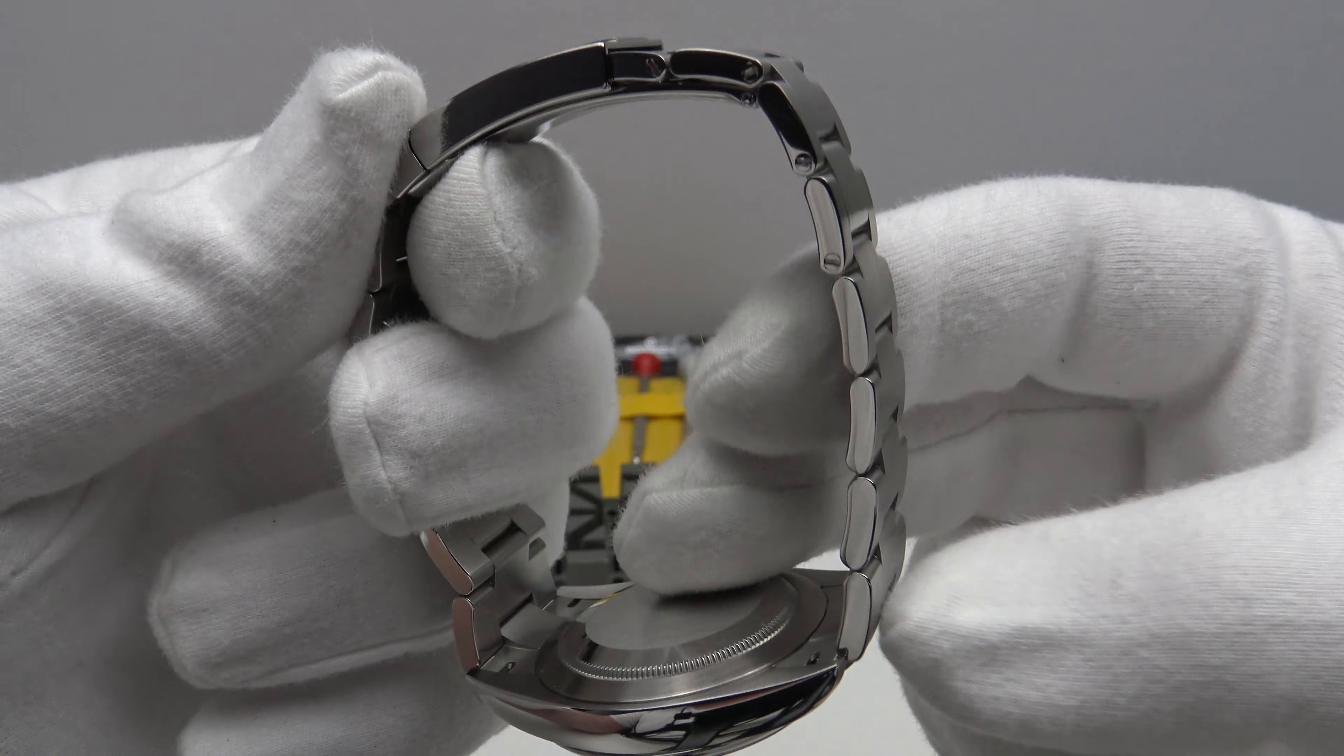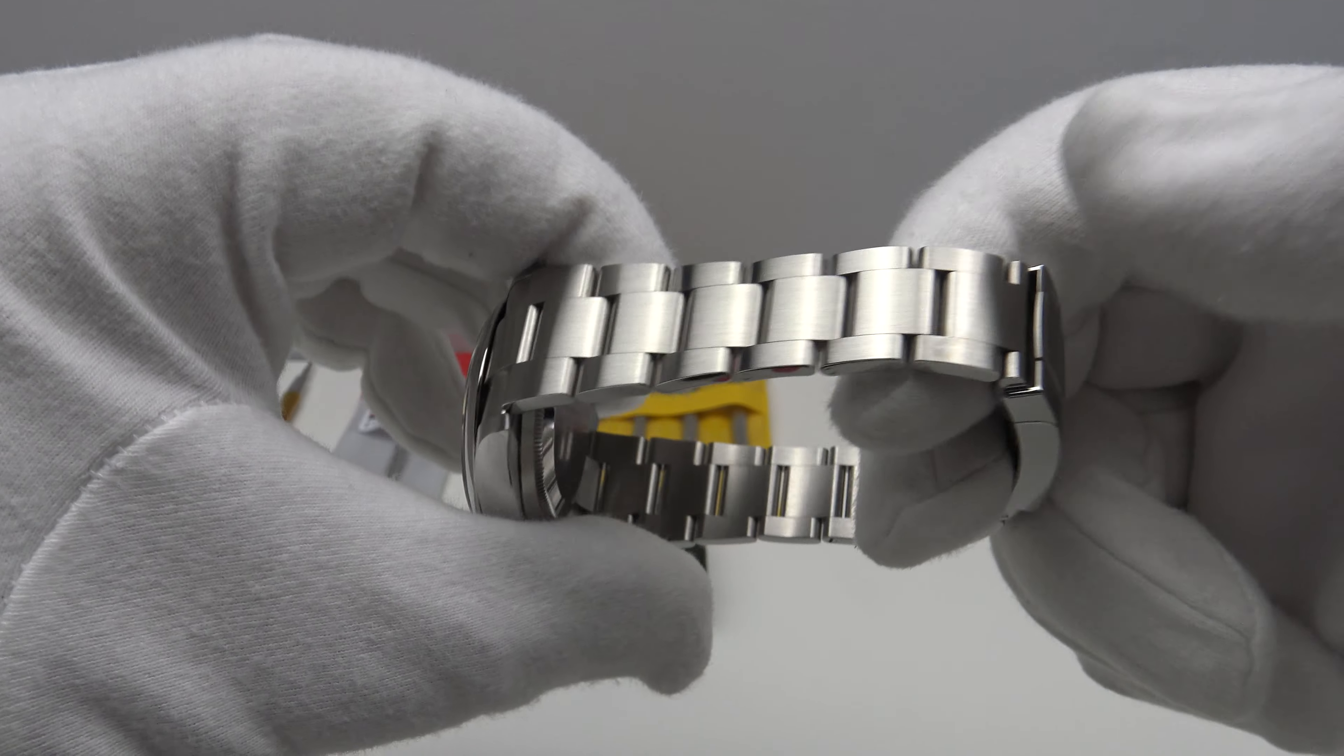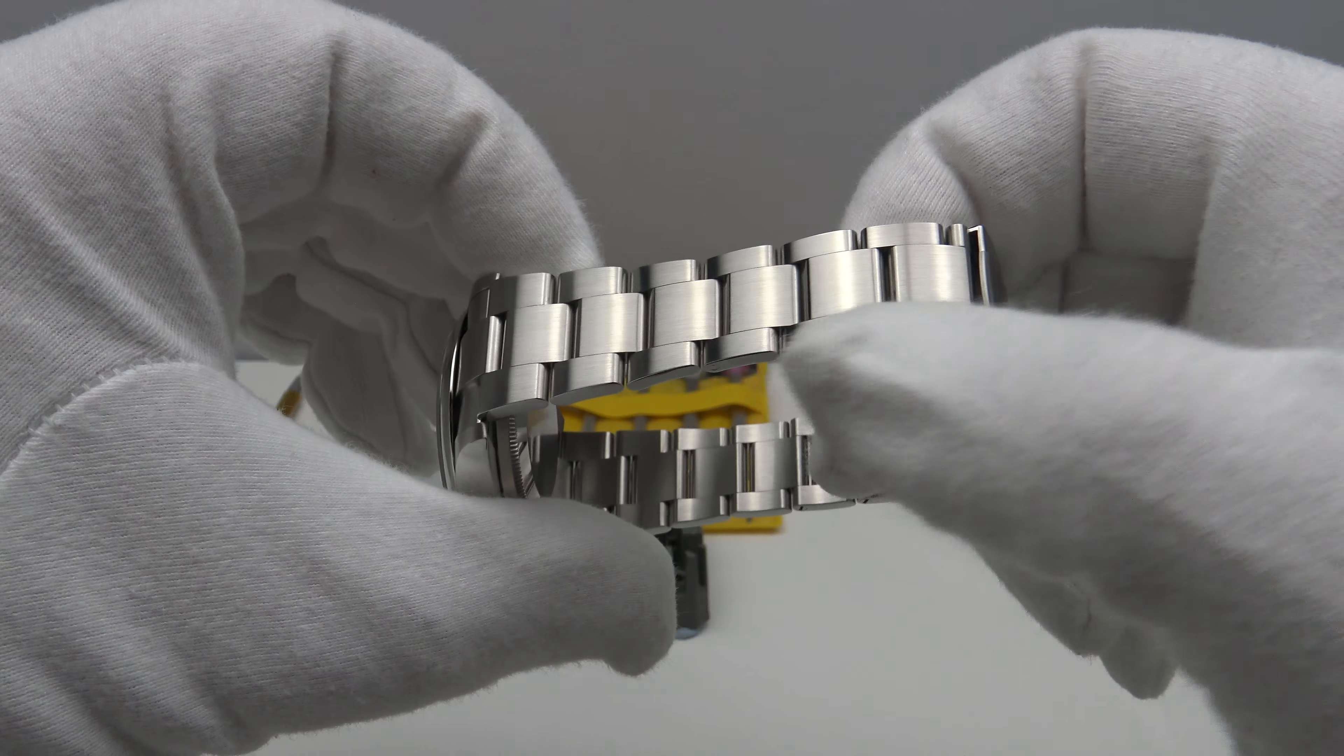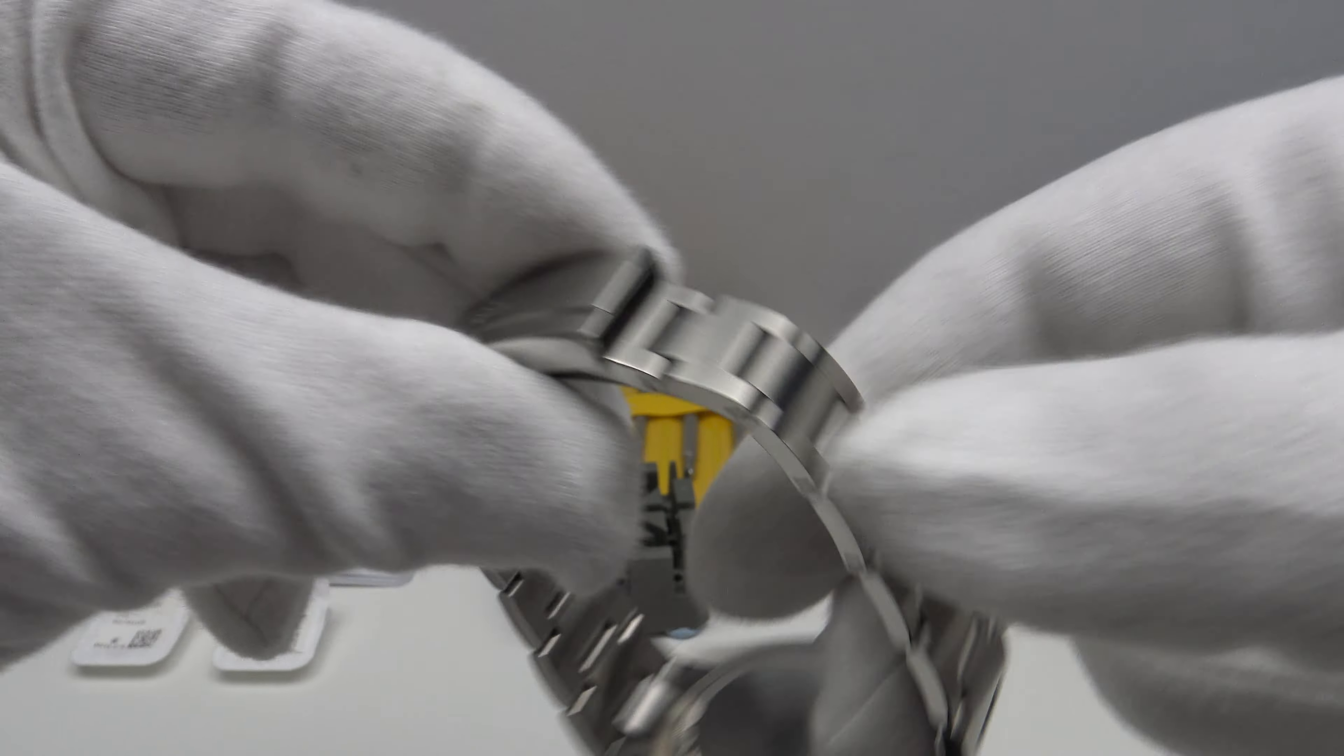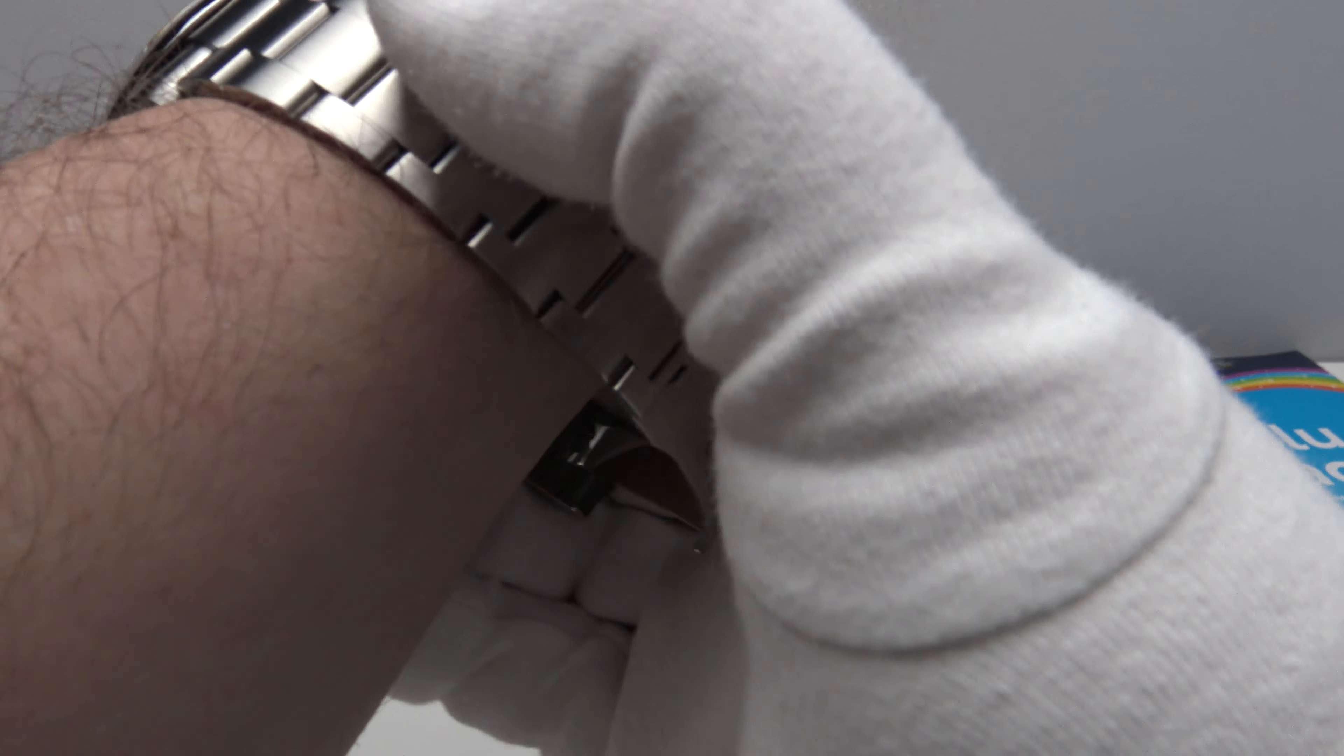And therefore, Rolex put seven links on one side and five on the other. Now, what I've done is I've added an additional link on the six o'clock and the 12 o'clock side. So, as you can see, it has six links on one side and it now has eight links on the other side. So, I'll give you a wrist shot and you can see how it fits on my eight inch wrist.